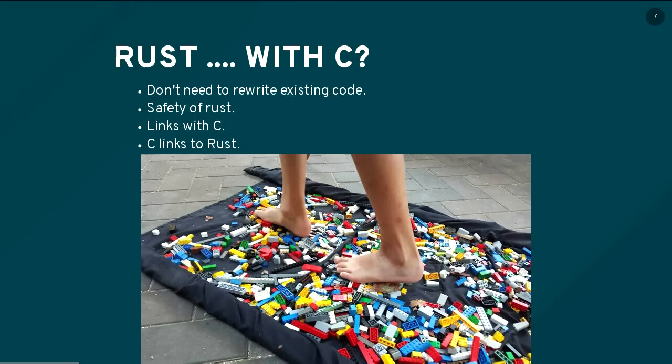So can we combine these? If you wonder what my job is like — voluntarily working on LDAP and writing C — just imagine this picture. Anyway, we don't want to rewrite our server. We have 20 years of quirks that we just can't get rid of, and people rely on that. But we want the safety of Rust. How can we do this? Well, an advertised feature of Rust is that it links to C, and that C links to Rust. Maybe this is possible.